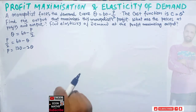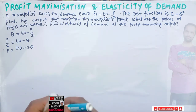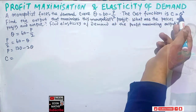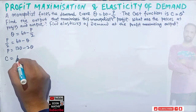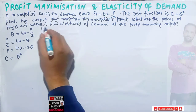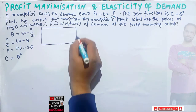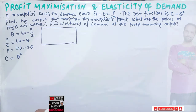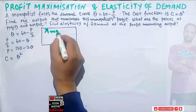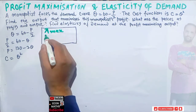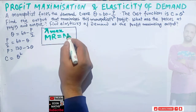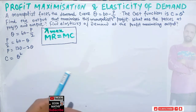We are also given the cost function c = q². Now, what is the profit-maximization condition for a monopolist? Profit maximization requires that marginal revenue equals marginal cost — simple, nothing unusual here. So we need to find marginal revenue and marginal cost.